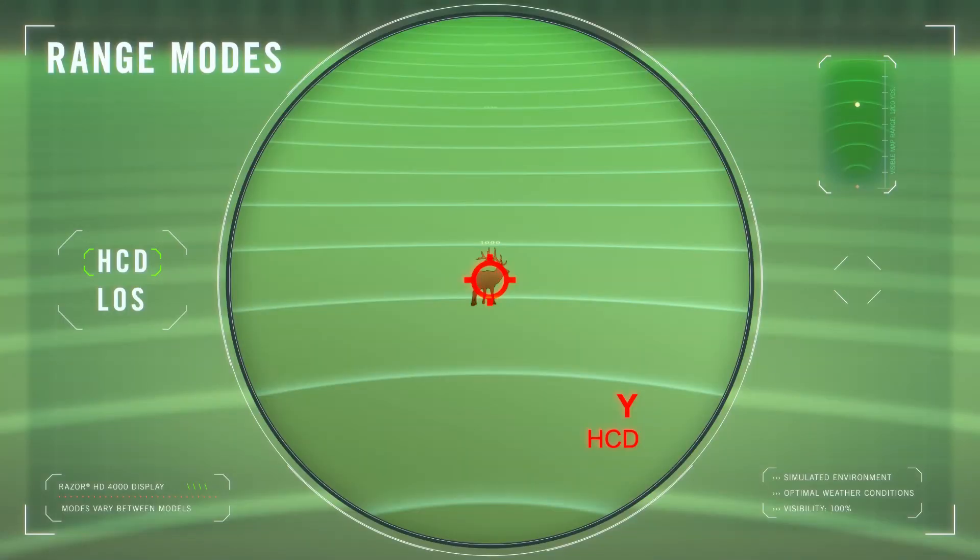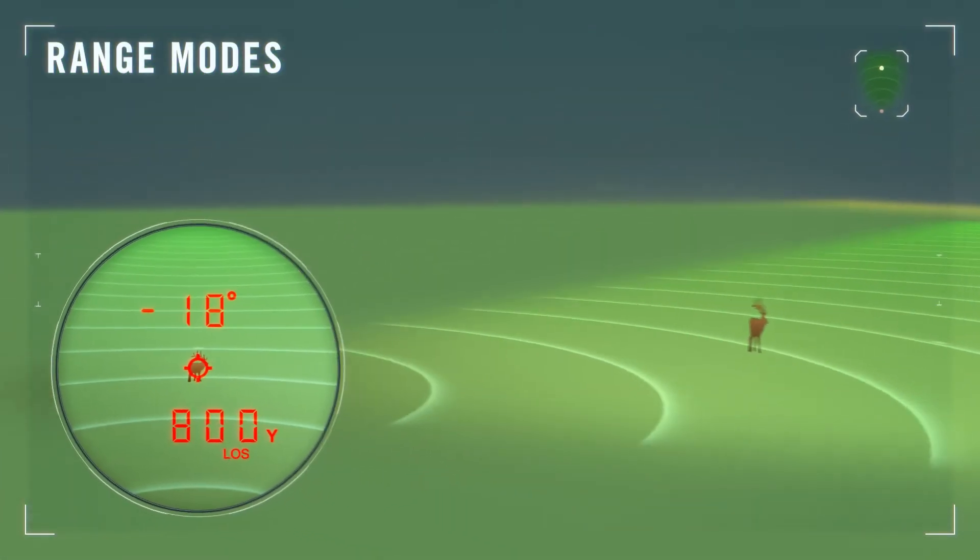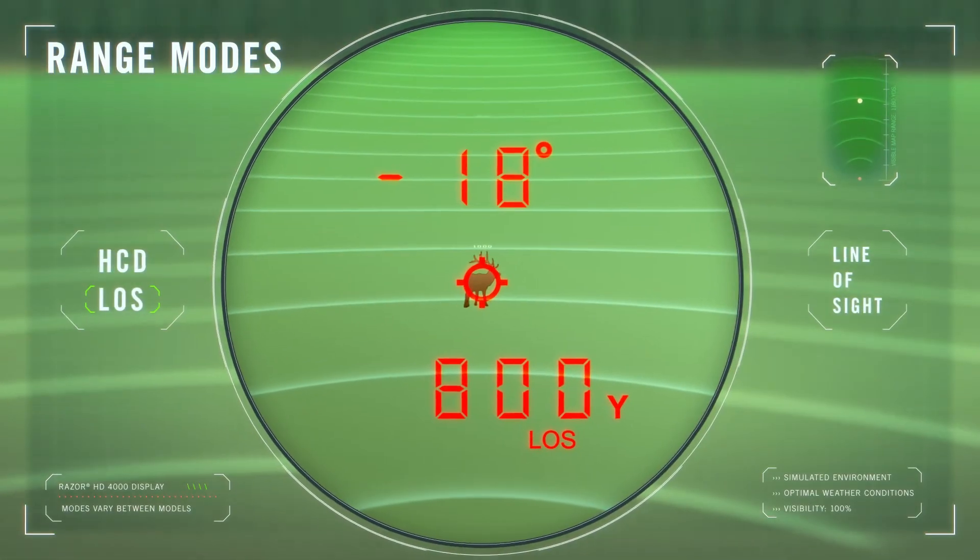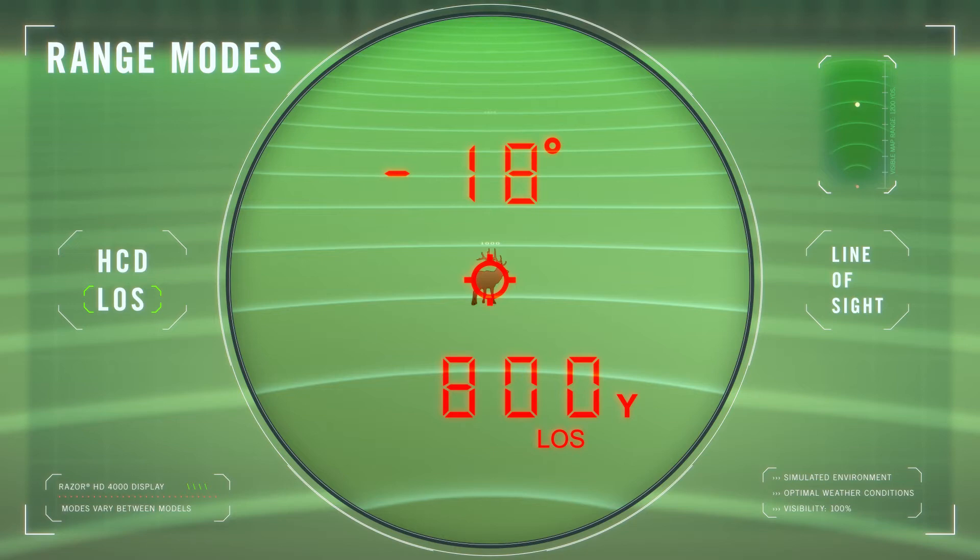LOS mode displays the actual line of sight range from the rangefinder to the target along with the slope angle. This mode is intended for shooters who are utilizing ballistic devices and who are shooting at distances beyond 500 yards with slopes greater than 15 degrees. Most commonly used ballistic devices require line of sight range input for accurate results.